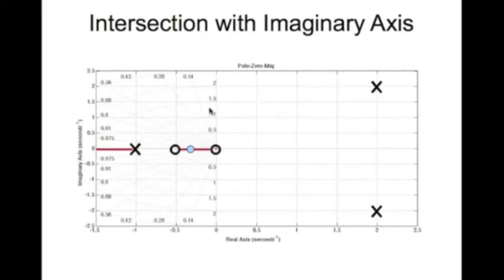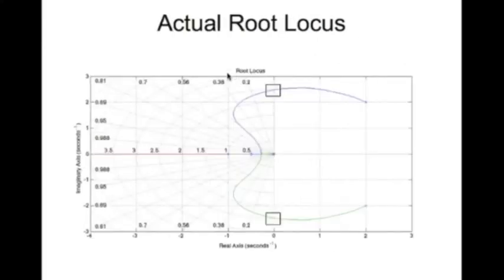The root locus travels across and enters the left half plane, crossing the imaginary axis at some point. Looking at the actual root locus plotted with MATLAB, the root locus travels to the break-in point, one branch goes one way and the other goes another way, and in between the root locus crosses the imaginary axis at approximately 2.5.